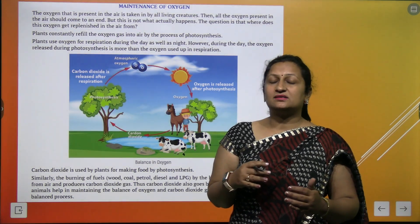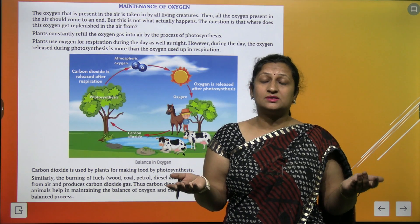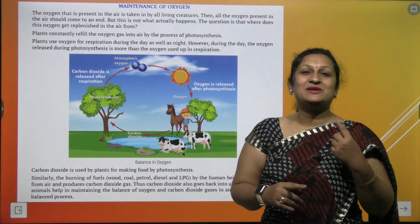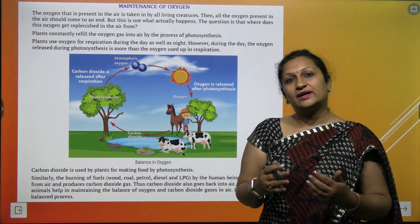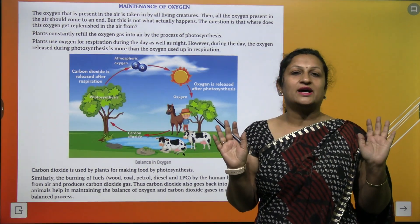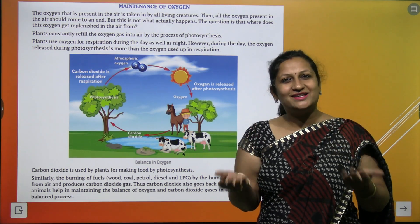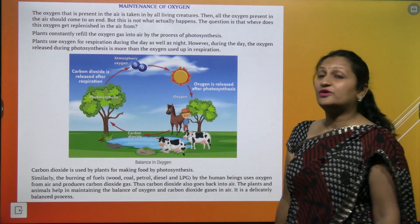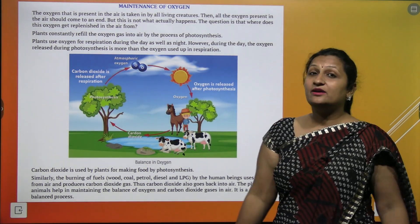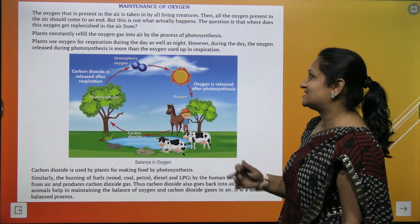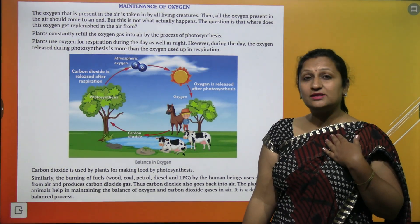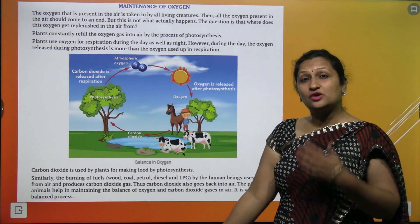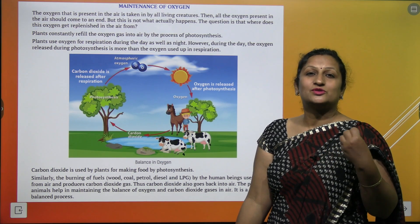Maintenance of oxygen. Now, this oxygen gas is being used up — kitne saare plants, animals, everybody is using oxygen. Toh yah oxygen khatam kyun nahi hoti? Because there is an oxygen cycle operating in nature. Hum oxygen consume karte hain and give out carbon dioxide. Plants take carbon dioxide and release oxygen by the process of photosynthesis. Is tarah se humari oxygen replenished hoti rehti hai. Plants use oxygen for respiration during day as well as night, but during the day they release more oxygen by photosynthesis. Carbon dioxide jo hum chhodte hain, usse plants lete hain aur food prepare karte hain.